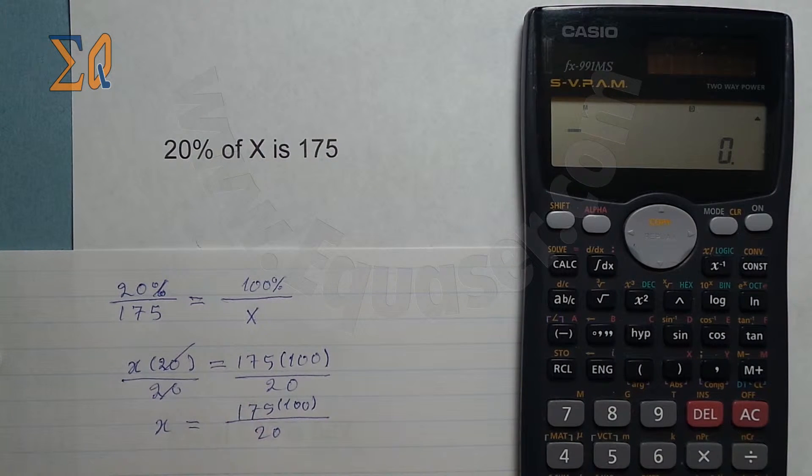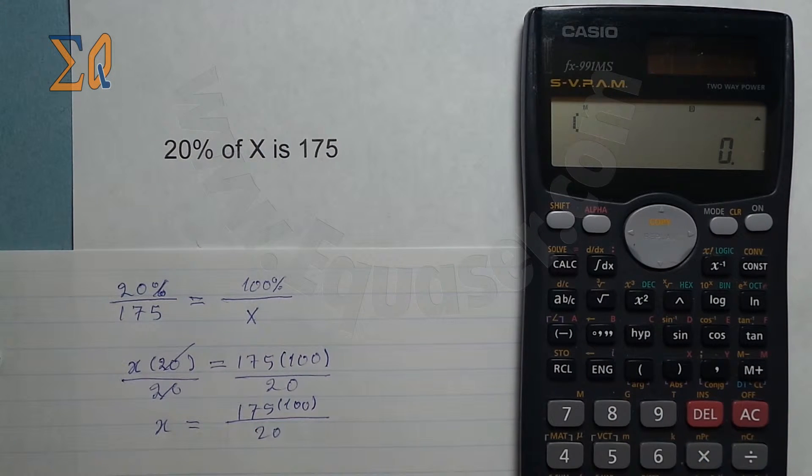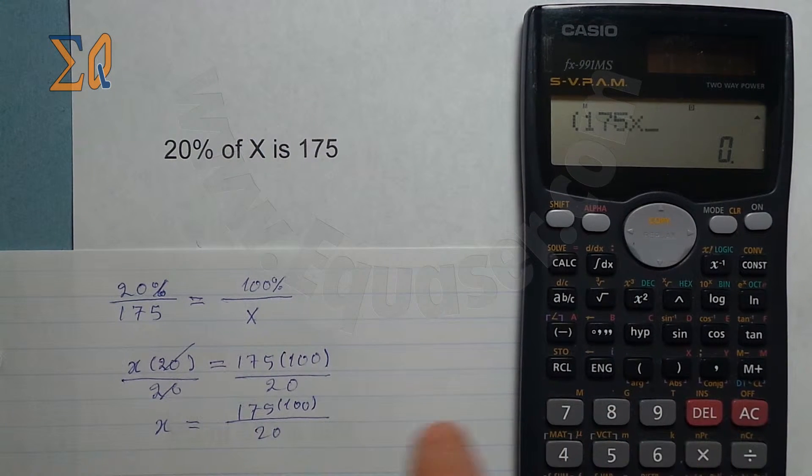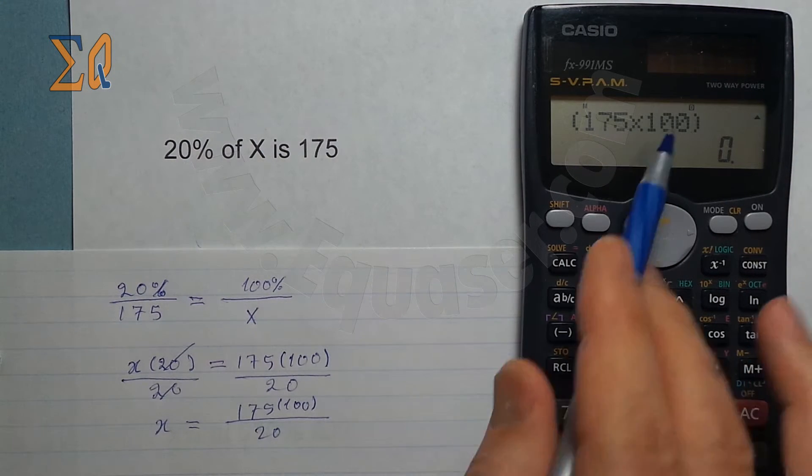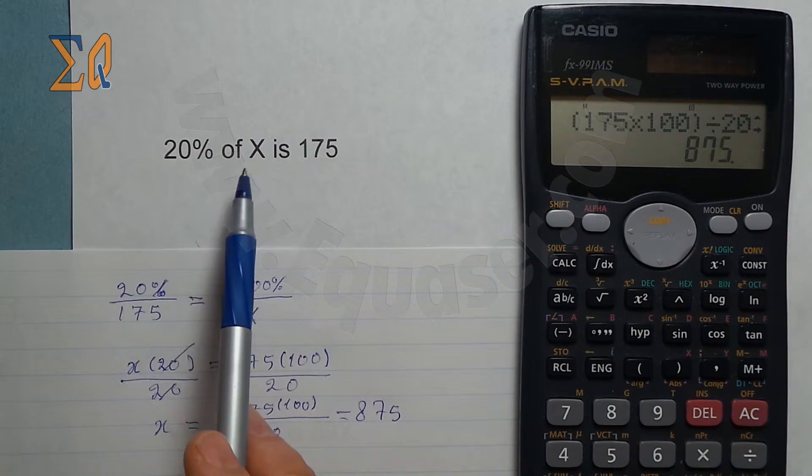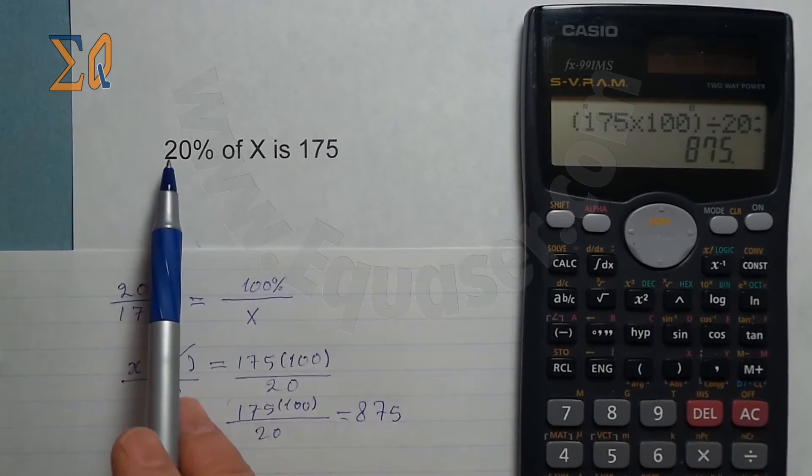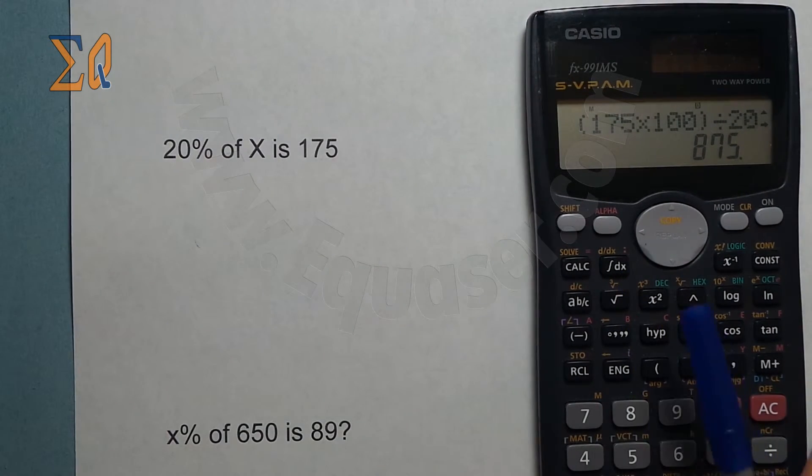I open a bracket, 175 times 100, bracket close, so that bracket refers to the whole numerator, divided by 20. So that is 875. The whole amount was 875, the 20% became 175. Let's do the next one.